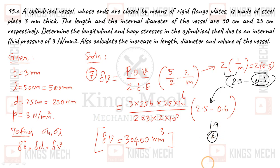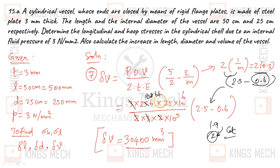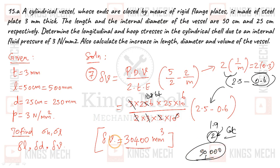Completing the δV calculation with the factor of 1.9 and simplifying — rounding intermediate values through traditional arithmetic — the final answer is δV = approximately 30,400 mm³. So the change in volume of the vessel equals delta V ≈ 30,400 mm³.